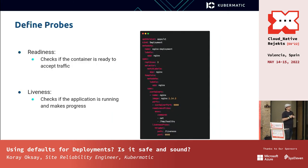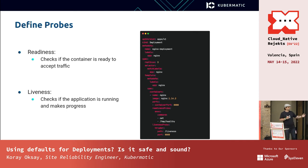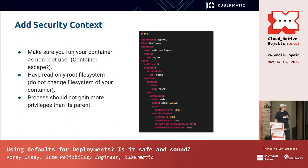You also need to define probes, especially readiness and liveness probes. You don't want your container to receive traffic before it's ready — it may need to do some initialization first. Define a readiness probe to ensure the container is ready for traffic, and a liveness probe to detect issues like deadlocks. If there's a problem, Kubernetes will restart your pod and continue working.